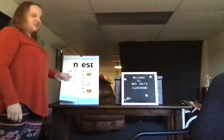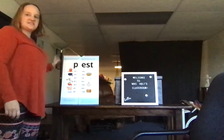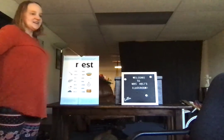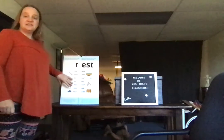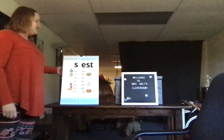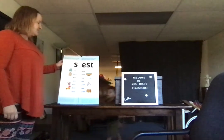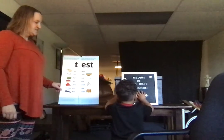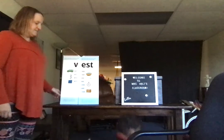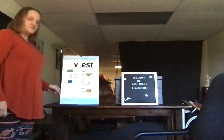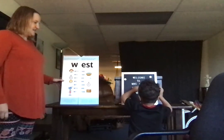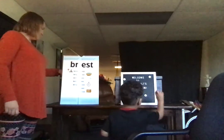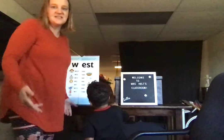Everybody say nest. Now change the n to p — and the word is pest. Everybody say pest. Now change the p to r — and the word is rest. Everybody say rest. Now change the r to s — and the word is sest. Everybody say sest. Now change the s to t — and the word is test. Everybody say test. Now change the t to v — and the word is vest. Everybody say vest. Now change the v to w — and the word is west. Everybody say west. Now change the w to z — and the word is zest. Zest is actually a word.